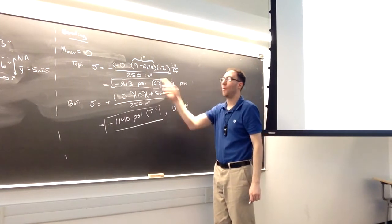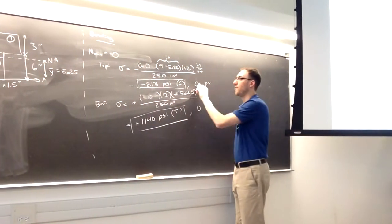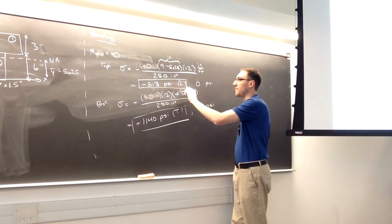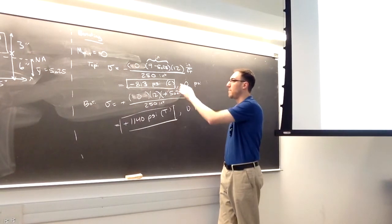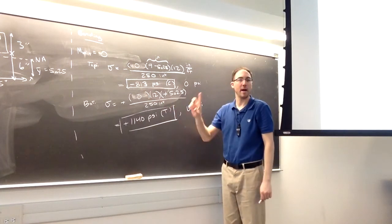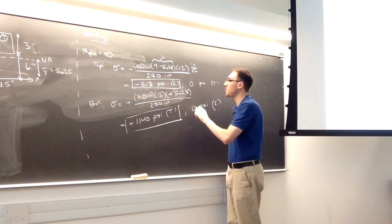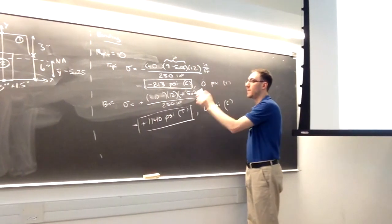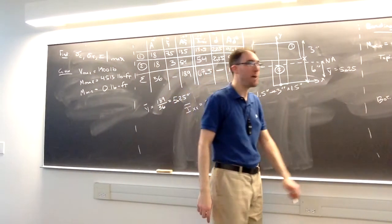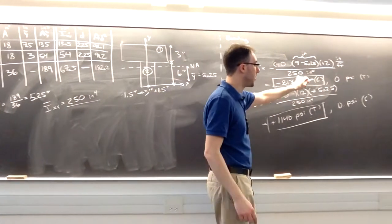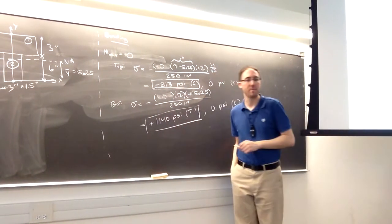So these are the four values found when looking at M-max and M-min, each at the top and bottom. Of these four choices, the most compressive is negative 813 psi and the most tensile is 1,140 psi — those are the answers for the most compressive and most tensile bending stress anywhere in the beam.